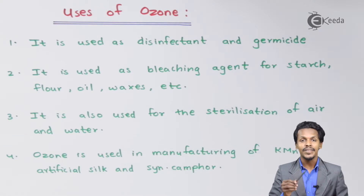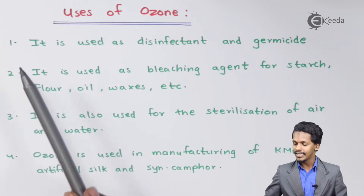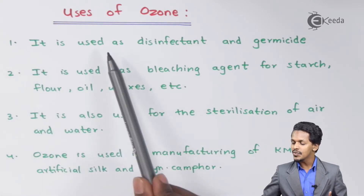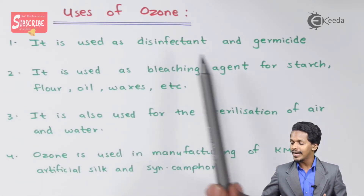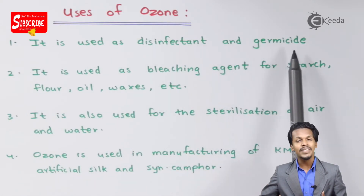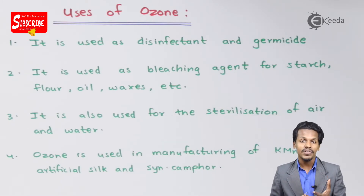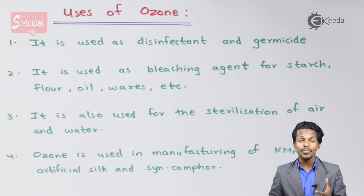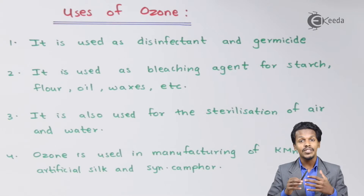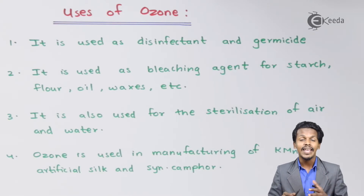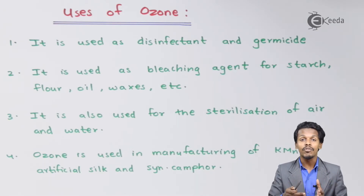So let me talk about the first point here. Ozone is used as a disinfectant as well as a germicide. That is the reason that ozone is also very poisonous in nature. If it has been consumed, or if it is basically present in any kind of matter, it could be toxic in nature.